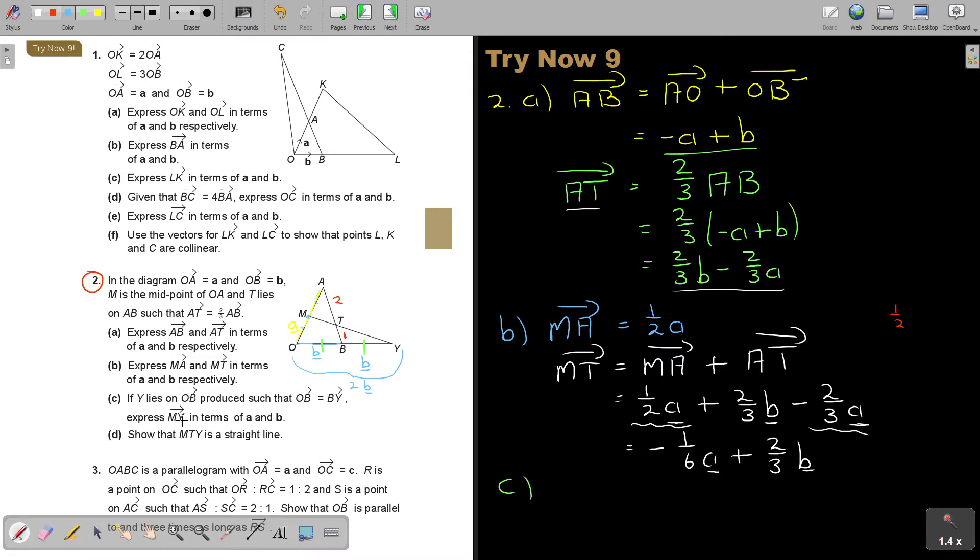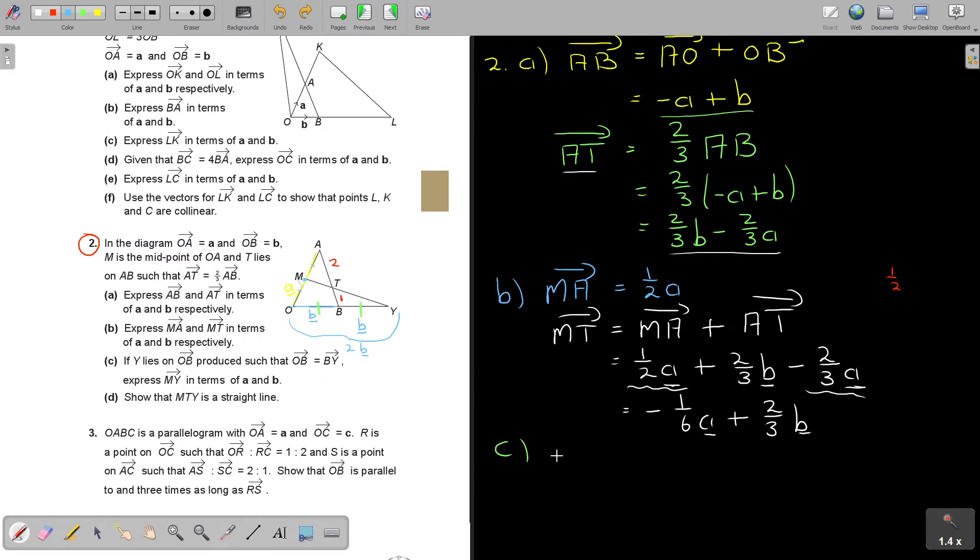Where is it now? Express MY in terms. Let's find that route again. MY. It's MY. So I started M. So it's going to be MO. Do you agree? MO plus OY. Now, again. MO. What will MO be? I think I worked it out. Did I work? Doesn't matter. OA was a. So OM would have been a half a. But now, it's in the opposite direction. So it's negative half a. That's MO. So, and now, and this is OY. So plus 2b.